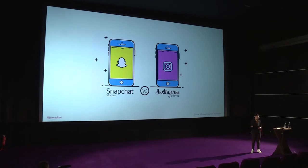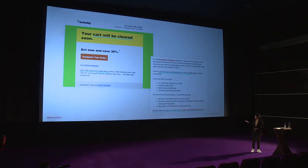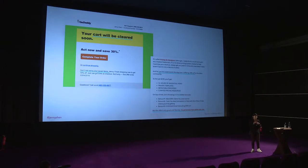Loss aversion is applied in products like Snapchat and Instagram, where disappearing stories must be watched within 24 hours — otherwise they're gone forever. It's also used in limited-time discounts or prompting the user that their cart will be cleared if they don't take action now. This makes users think: in order to not lose this discount or my cart, I must take action right now.